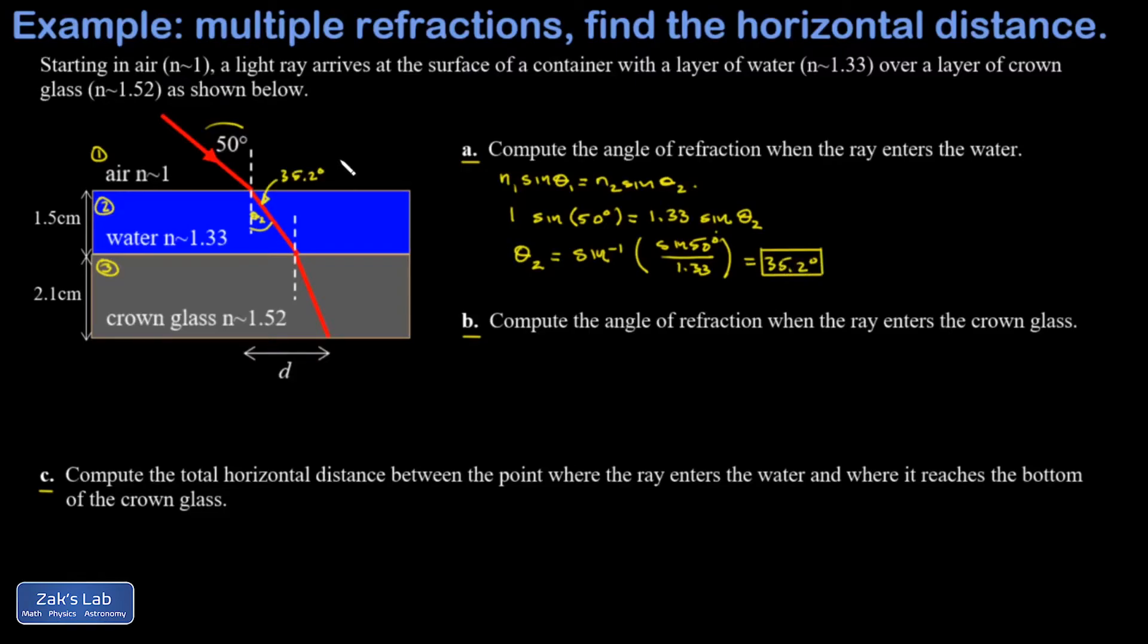Now that angle theta 2 equals 35.2 degrees is going to be the same as the incident angle for the second refraction, because these two angles are alternate interior angles. So that's also theta 2, and then I apply Snell's law to the second refraction and get theta 3.